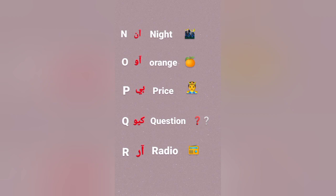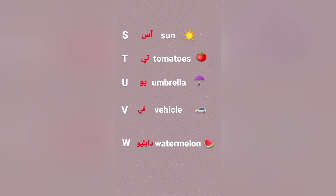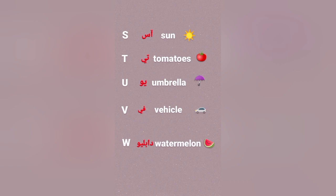A, B, C, D, E, F, G H, I, J, K, L, M, N, O, P Q, R, S, T, U, V W, X, Y, and Z. Now I know my ABCs.